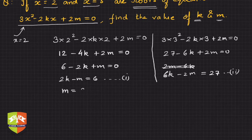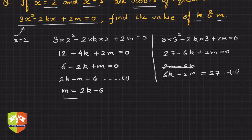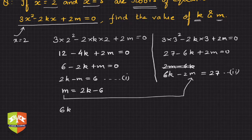From here I can say m is equal to 2k minus 6, just manipulating it. And now let us deploy this value of m here.